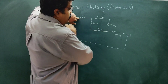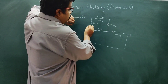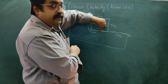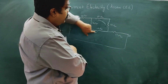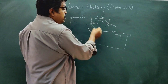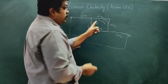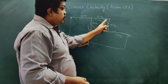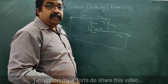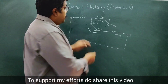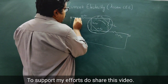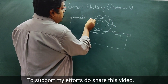It is 10 ohm. It is in series — 10 and 10 is 20, and 10 and 10 is 20. This resistance is in parallel, so 20 and 20 in parallel gives equivalent resistance of 10 ohm. So we have 10 ohm resistance.